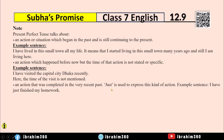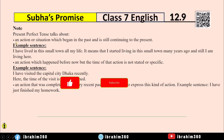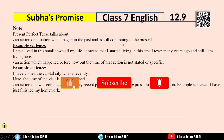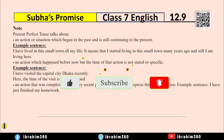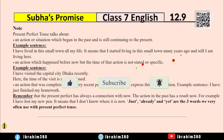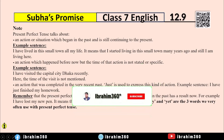When 'just,' 'already,' or 'yet' are present in a sentence, and 'have' or 'has' is present with the past participle of the main verb, it indicates Present Perfect Tense. Remember: Present Perfect always has a connection with now.